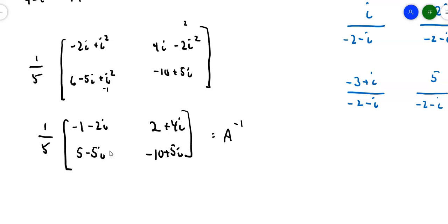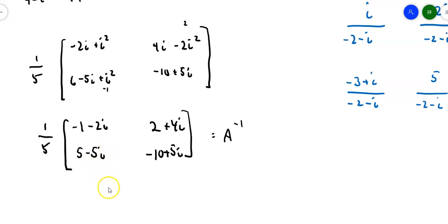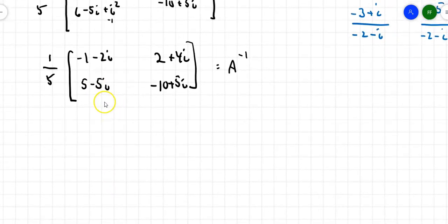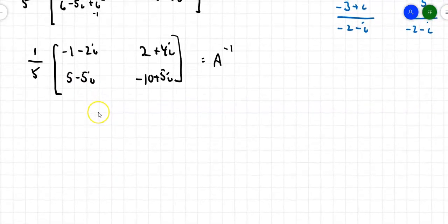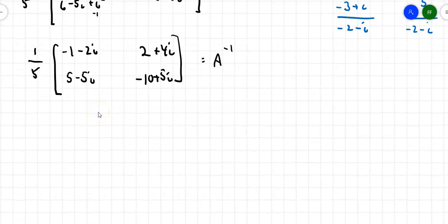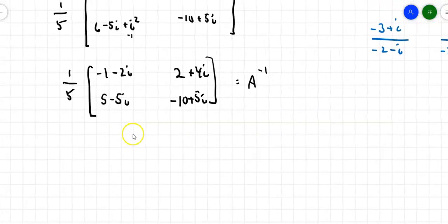That's A inverse. I could divide everything inside by 5, which would simplify the bottom row but make the top row messier, so I'll leave it like that. We'll tackle linear combinations in the next video.